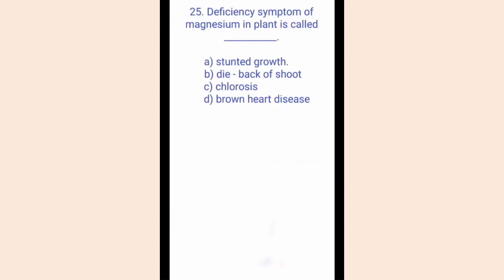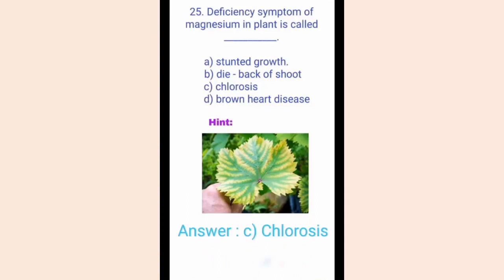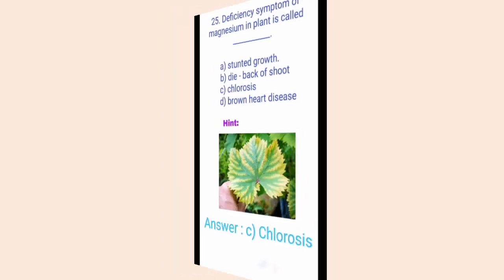Last but not the least, question number twenty-five. Deficiency symptoms of magnesium in plants is called dash. The options are A. Stunted growth, B. Die back of shoot, C. Chlorosis, D. Brown heart disease. The hint shows a picture of a leaf which has turned yellow due to disease. The correct answer is option C, Chlorosis. Chlorosis is loss of the normal green coloration of leaves caused by magnesium deficiency or lack of light.